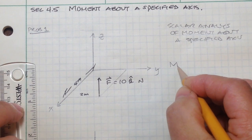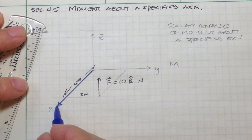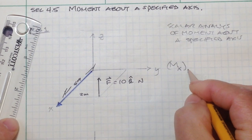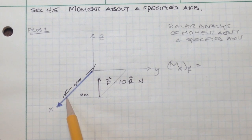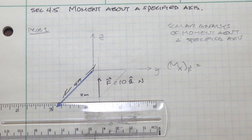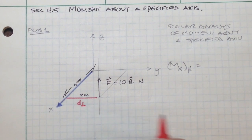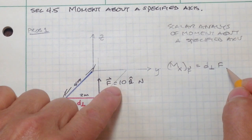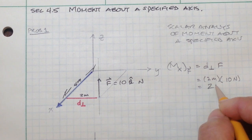The moment about the x-axis due to this force F is given by the perpendicular moment arm from a point that lies on this axis to the line of action of that force F. In this case, the moment arm is simply this distance right here. So the moment is that moment arm times the magnitude of F: 2 meters times 10 newtons equals 20 newton meters.